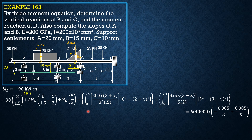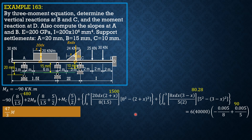Simplifying: the first term is negative 480. This integral is 1,500. This integral is 80.28, and the value on the right side is 90. So simplifying, the result is 47 over 3 MB plus 2.5 MC equals negative 1010.28. Call this Equation 1.